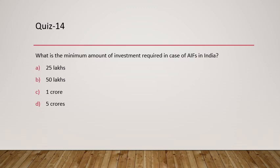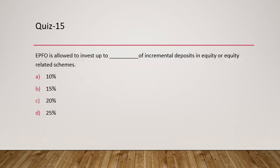Question 14: What is the minimum amount of investment required for Alternative Investment Funds in India? For a portfolio manager it is 50 lakhs, and for an Alternative Investment Fund it is one crore. Question 15: EPFO is allowed to invest up to 15% of incremental deposits in equity or equity-related schemes. With this, we have completed all 15 questions.